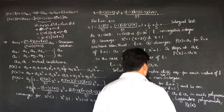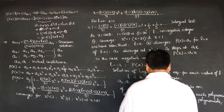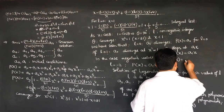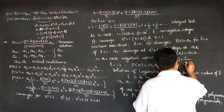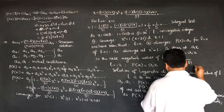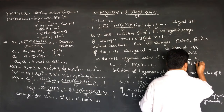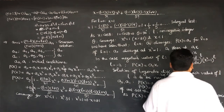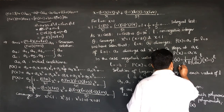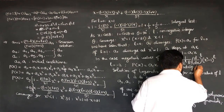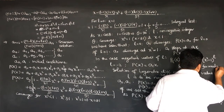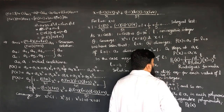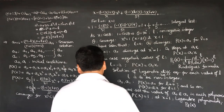From the Rodrigues formula, P_l(x) is equal to 1 over (2^l · l!) times (d/dx)^l of (x^2 - 1)^l. This is called the Rodrigues formula, and from it we can derive all the different Legendre Polynomials, each of which is a solution of the Legendre equation.